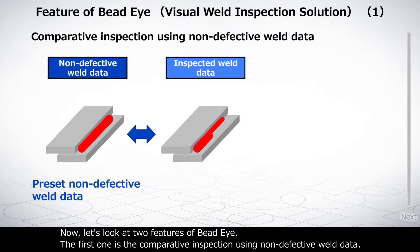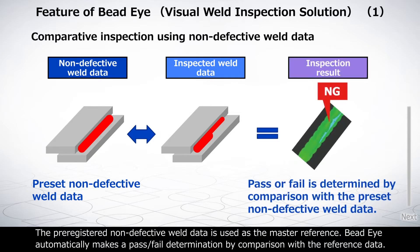Now let's look at two features of Bead Eye. The first one is the comparative inspection using non-defective weld data. The pre-registered non-defective weld data is used as the master reference. Bead Eye automatically makes a pass-fail determination by comparison with the reference data.